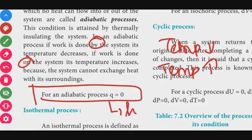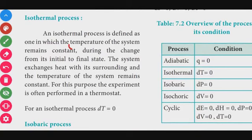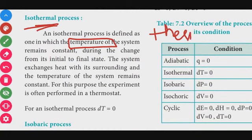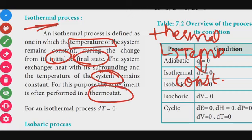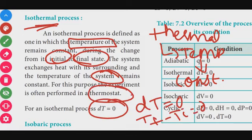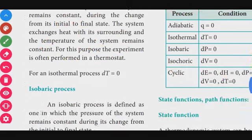Isothermal process: the temperature of the system remains constant throughout. The initial and final states are at the same temperature, so delta T = 0 (T-final minus T-initial = 0). The system exchanges heat with its surroundings, but temperature stays constant. This is performed using a thermostat. For example, if temperature is 5 degrees both initially and finally, T-final minus T-initial = 0.